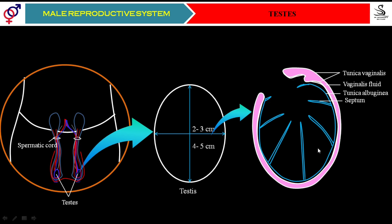These compartments are called testicular lobules. Each testis is divided into 250 testicular lobules. Students, if a question asks how many testicular lobules are in the testes (singular), your answer is 250. But if they ask about the testes (both together), your answer must be 500. Note the difference: 'testis' refers to a single one, while 'testes' means both together.